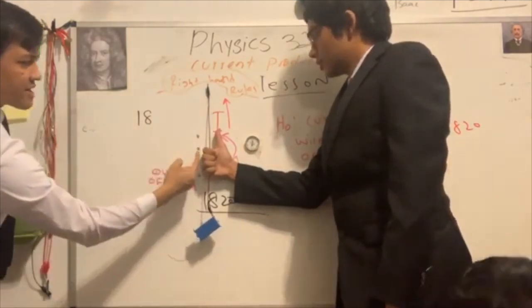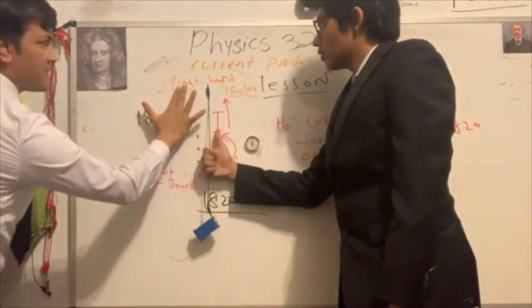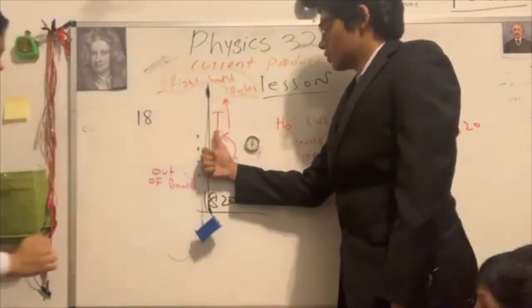And this is the direction of the magnetic field. We call it the right-hand rule.